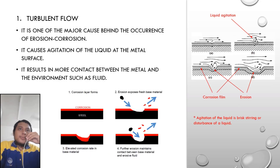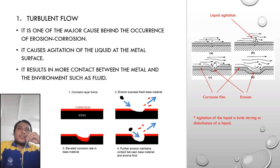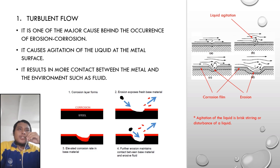For turbulent flow, it is considered one of the major causes behind erosion corrosion. For example, in a water pipe, liquid flow such as water will create a corrosion layer onto the metal. Then particles inside the water will scrape the corrosion layer, creating small holes that cause agitation of the liquid at the metal surface. The liquid agitation results in more scraping of the layer, creating more contact between the metal and the environment, which is water.